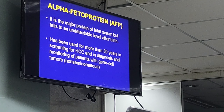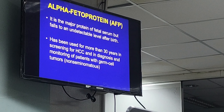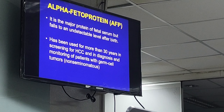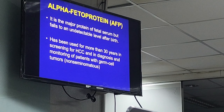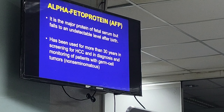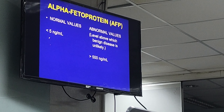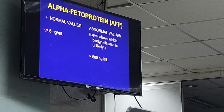The next tumor marker is alpha-fetoprotein. It is a major protein of fetal serum but falls to an undetectable level after birth. It has been used for more than 30 years in screening for hepatocellular carcinoma and in diagnosis and monitoring of patients with germ cell tumors. The normal total value of alpha-fetoprotein should be less than 5 ng/mL.